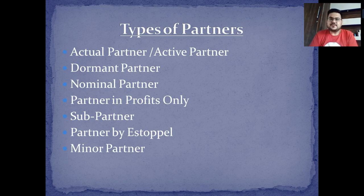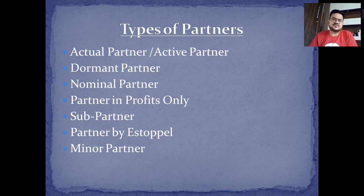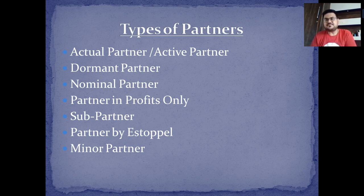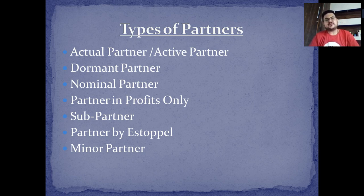Now we look at different types of partners. An actual partner is the active partner who is actively involved in the business. A dormant or sleeping partner puts in money but is not interested in running the business — he puts money and gets the revenue. A nominal partner takes perhaps a 5% or 10% share but gives their name. Usually these are famous people like politicians or celebrities who promote it as their business but do not participate in it. They may or may not take money.